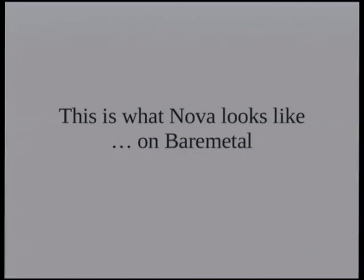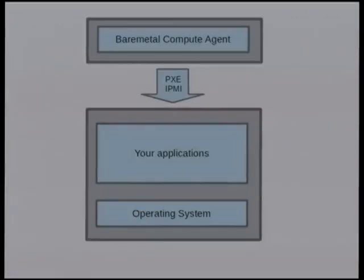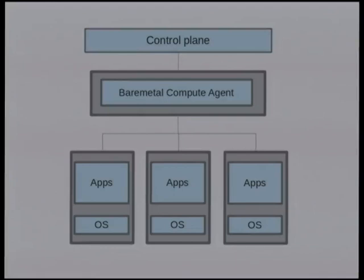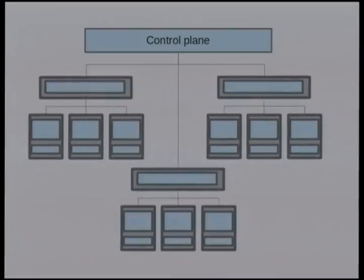With bare metal, things are pretty different - we're abstracting the idea of hardware itself. On one host you have your bare metal compute agent, which is just a Nova Compute agent with a different driver loaded. You've got a physical machine with an operating system and user space applications - basically the equivalent of a VM, but on physical hardware. We're using PXE and IPMI to control this. So you've got a control plane, a Nova Compute agent, and a bunch of instances - these are Nova instances, but physical hardware. Your network could be really large with a bunch of bare metal Nova computes controlling lots and lots of hardware.